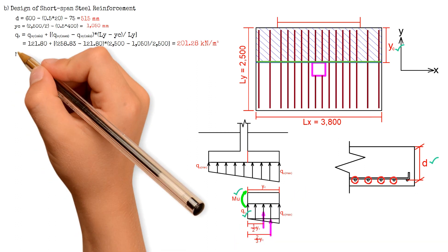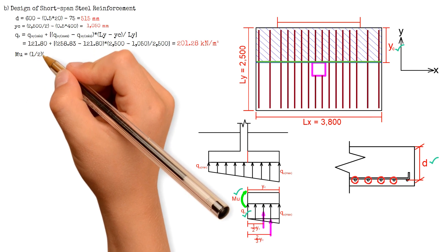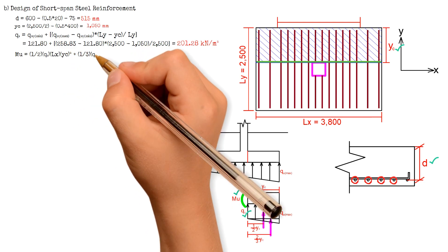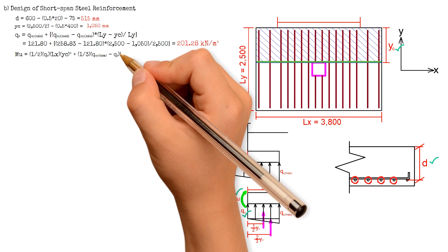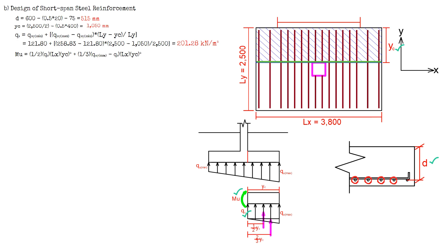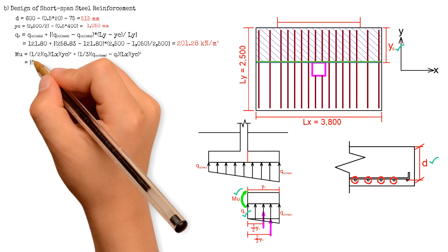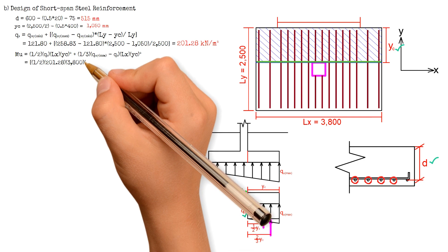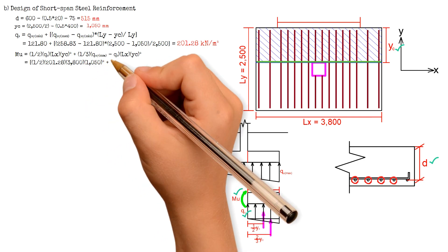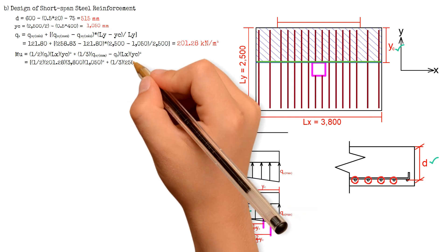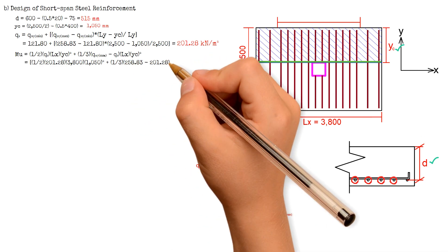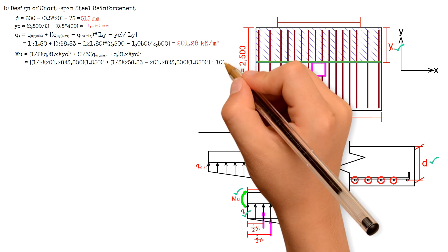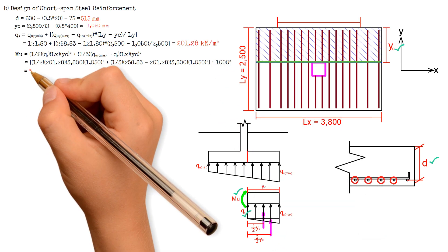Next, we calculate for the moment Mu, which equals one-half of q sub s times Lx times y sub c squared, plus one-third times (q_u_y_max minus q sub s) times Lx times y sub c squared. We have one-half times 201.28 times 3800 times 1050 squared, plus one-third times (258.83 minus 201.28) times 3800 times 1050 squared, giving a value of 502 kN·m.